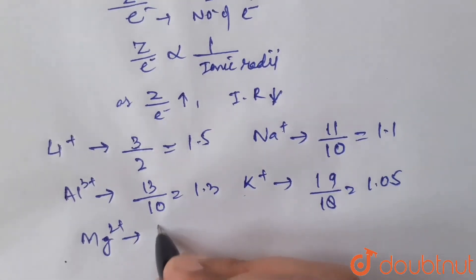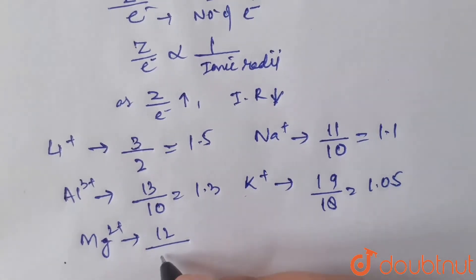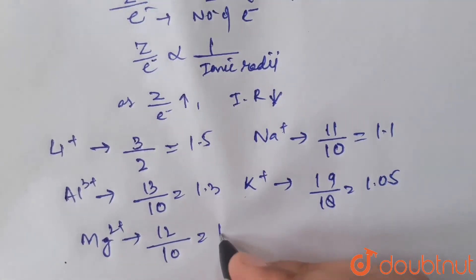Then Mg2+. Atomic number of magnesium is 12, and number of electrons for Mg2+ is 10. The ratio becomes 1.2.